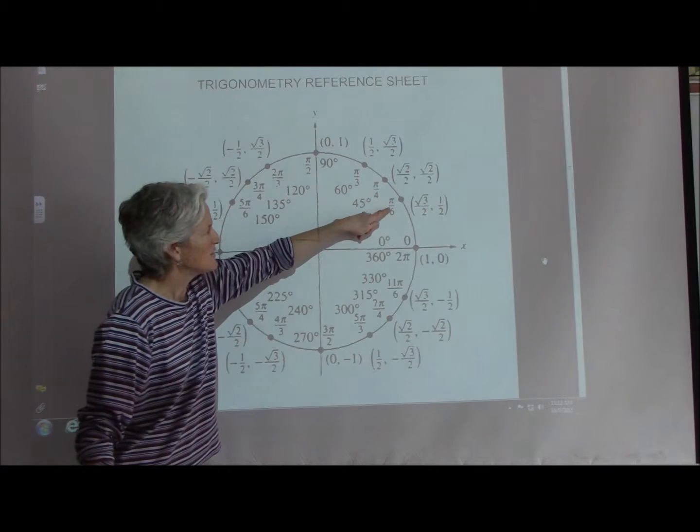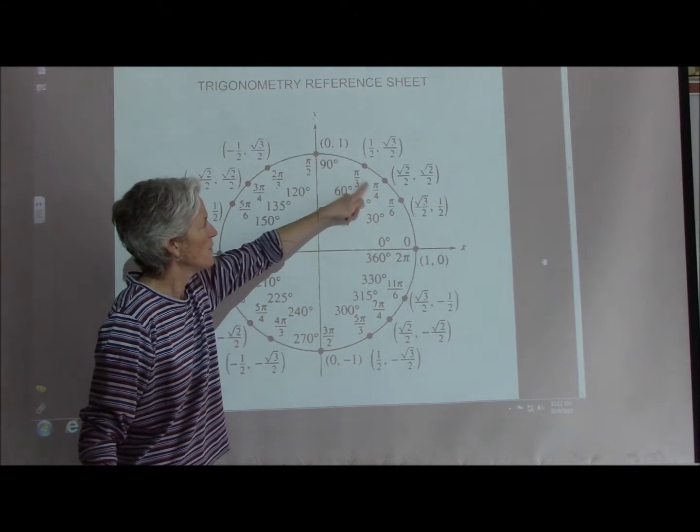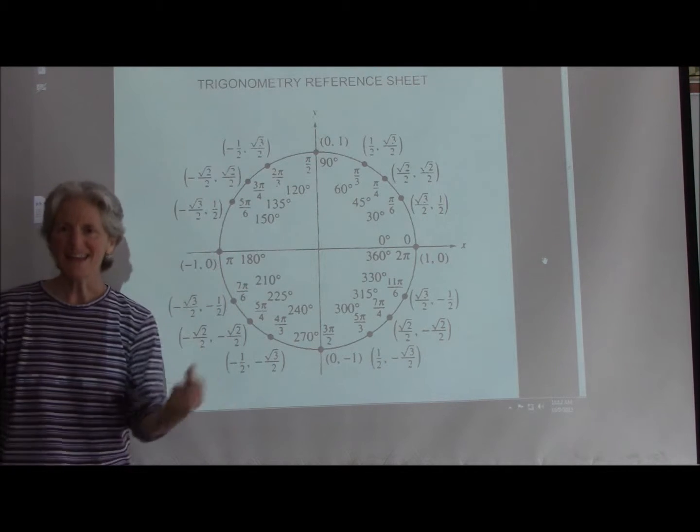Now, what are all of these right here, Mr. Haas? Pi over 6, pi over 4, pi over 3. I think those are probably radians. Those are radians!